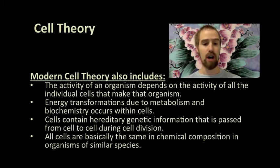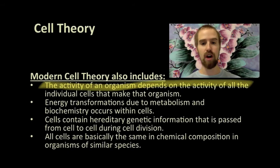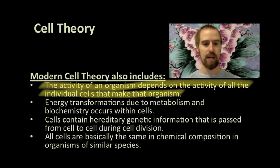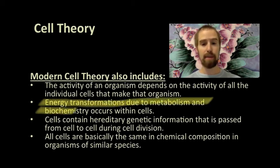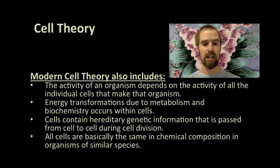Modern cell theory also states that the activity of an organism depends on the activity of all the individual cells that make that organism. Basically, this means that what an organism is capable of doing depends on what that organism's cells are capable of doing. Energy transformations due to metabolism and biochemistry occur within cells. Molecules are built and broken down, absorbing and releasing energy within cells. We've learned quite a bit about this in our last unit on biochemistry.